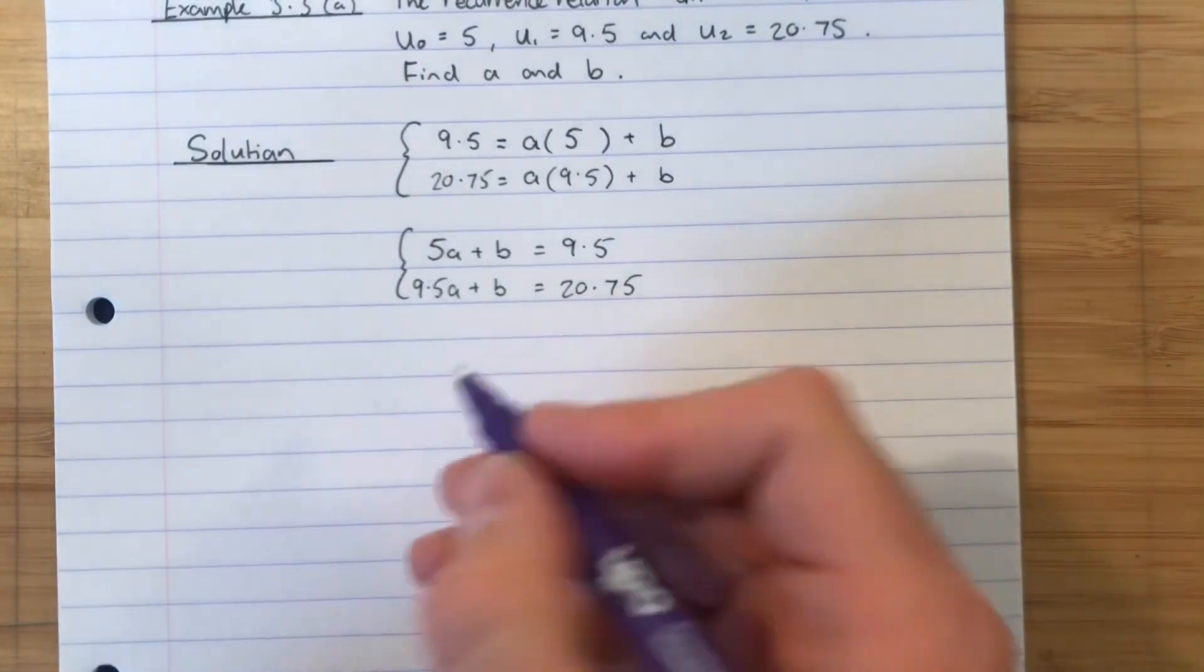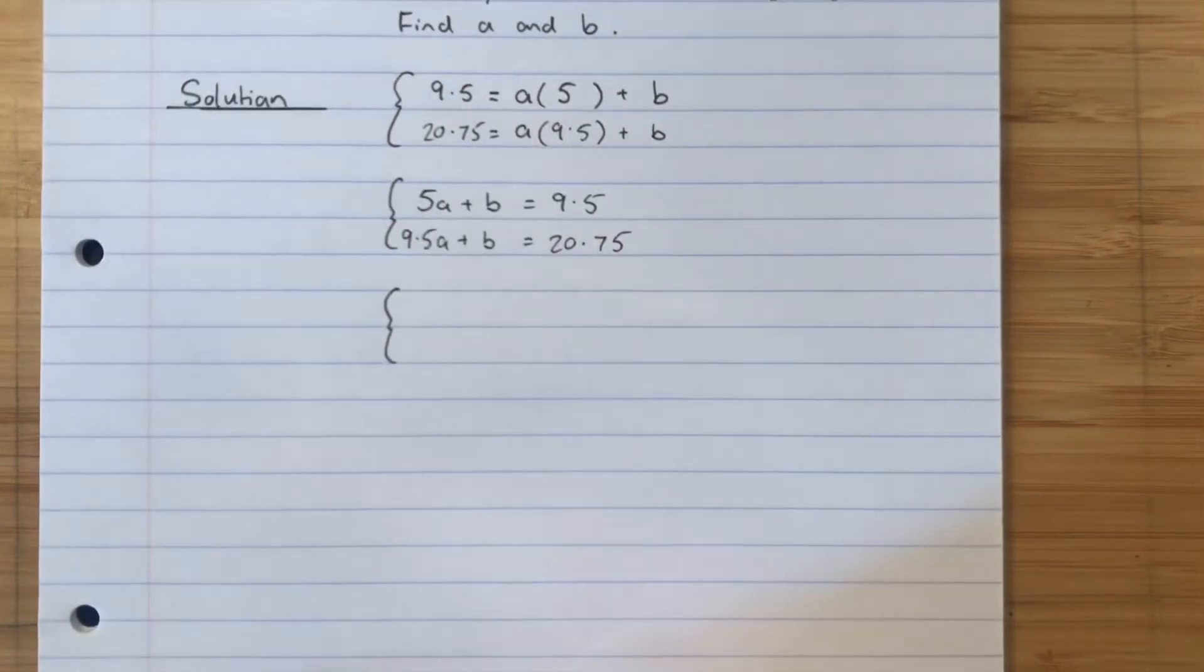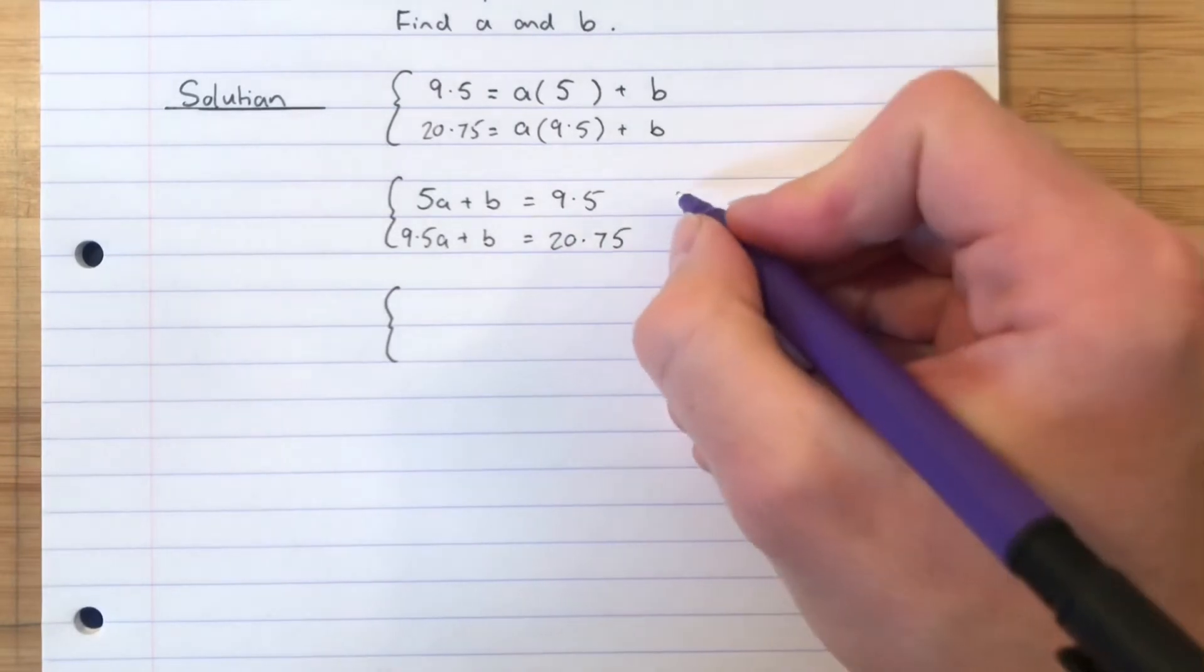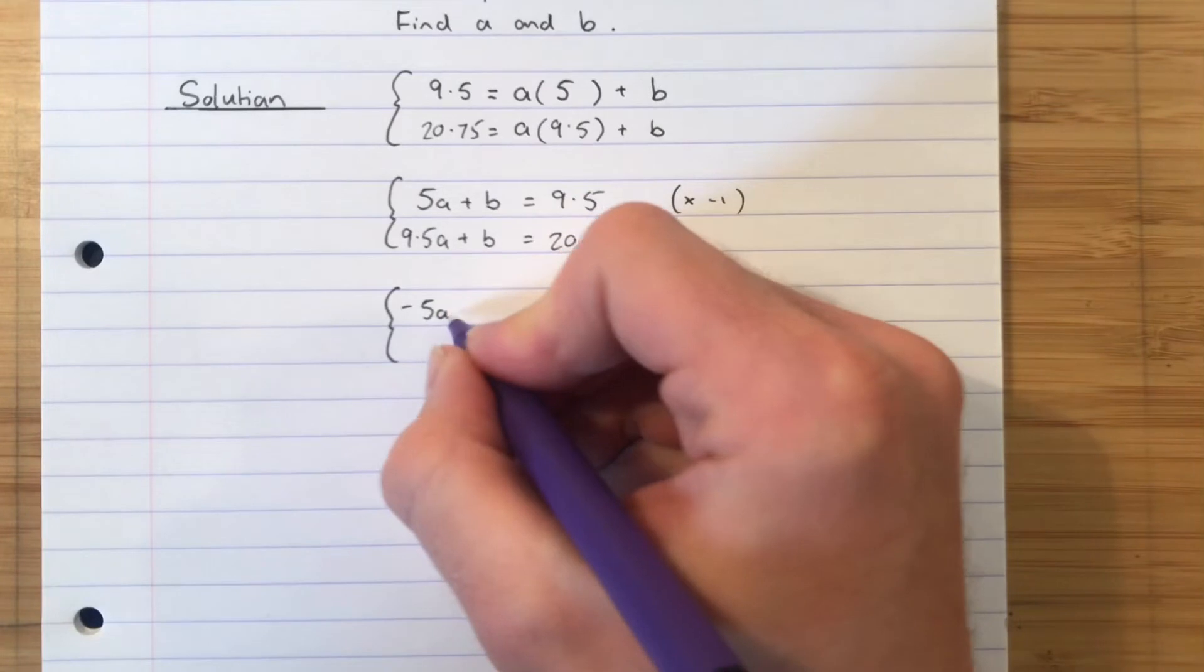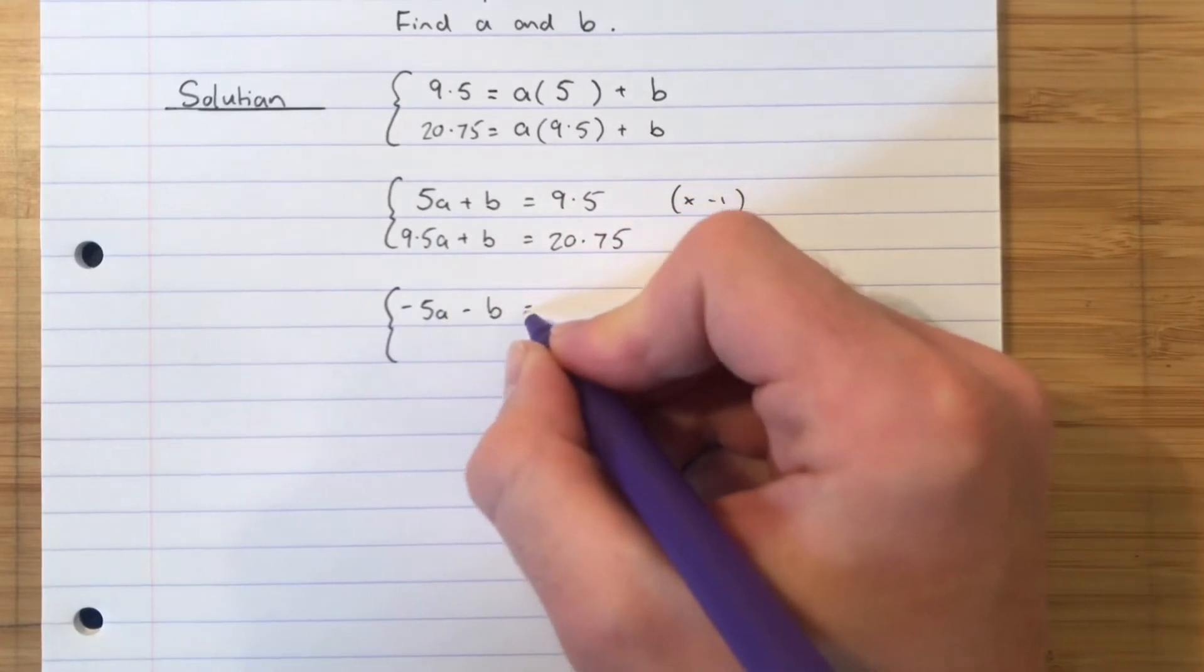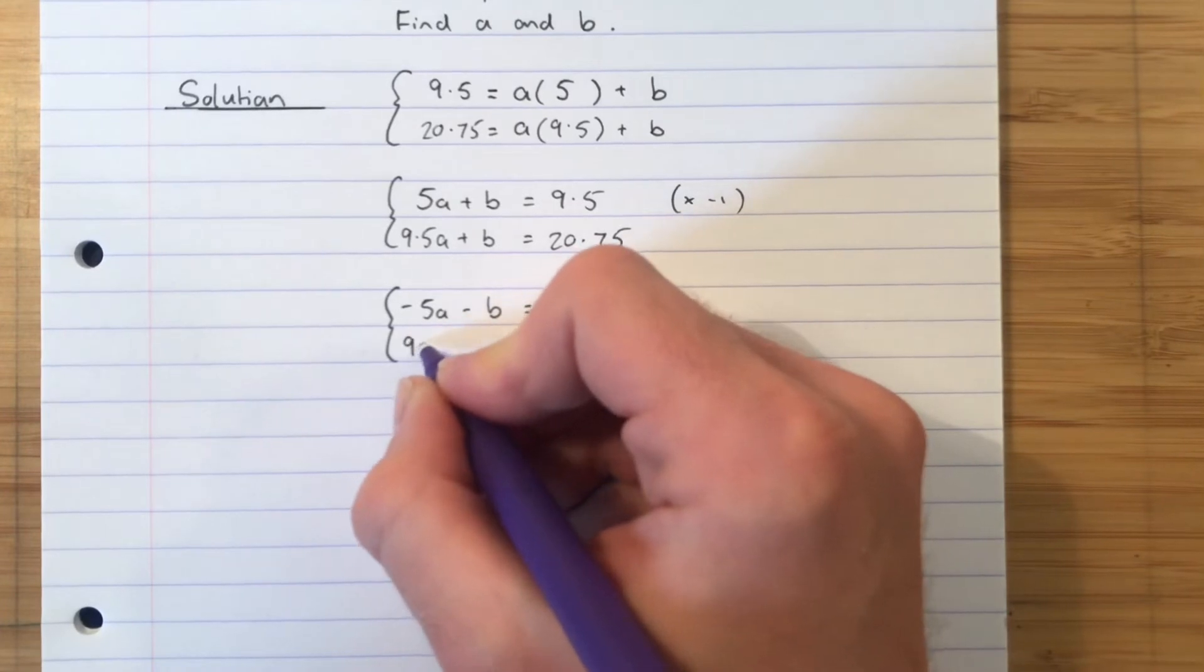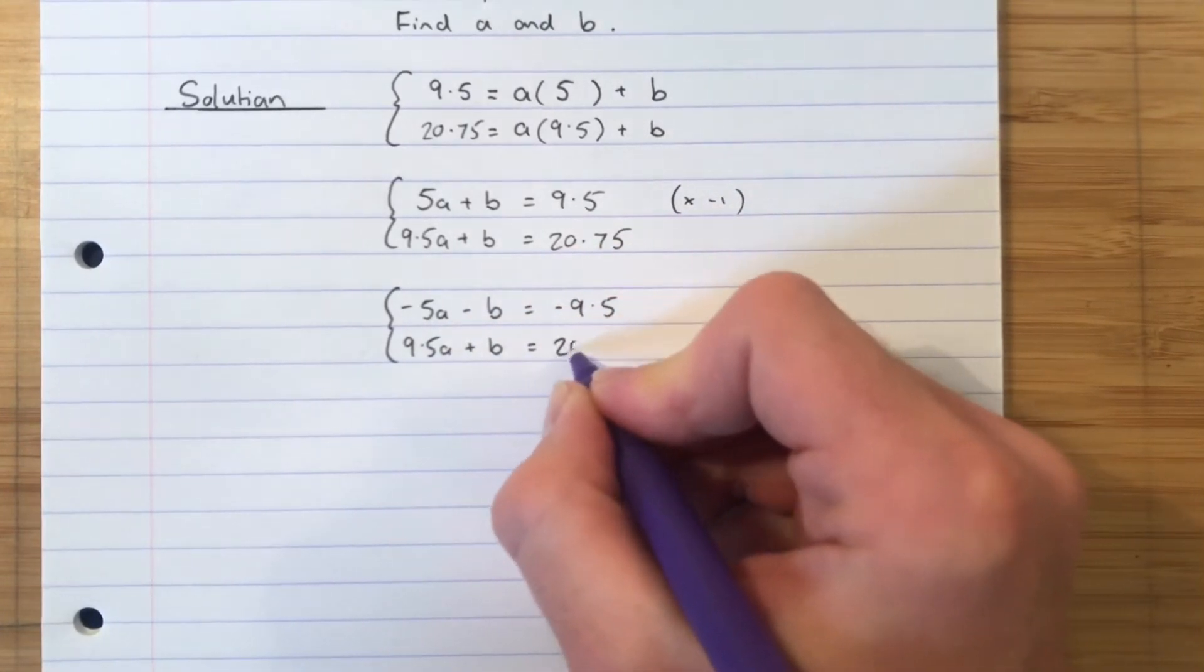So we can multiply one of them through by negative one. As I've said already, I'm going to choose to multiply the top one through by negative one because that's a smaller one. So let's just put here, I'm going to times this one by negative one. So that will become negative 5A. Negative B equals negative 9.5. And over here, I've still got 9.5A. Add B equals 20.75.